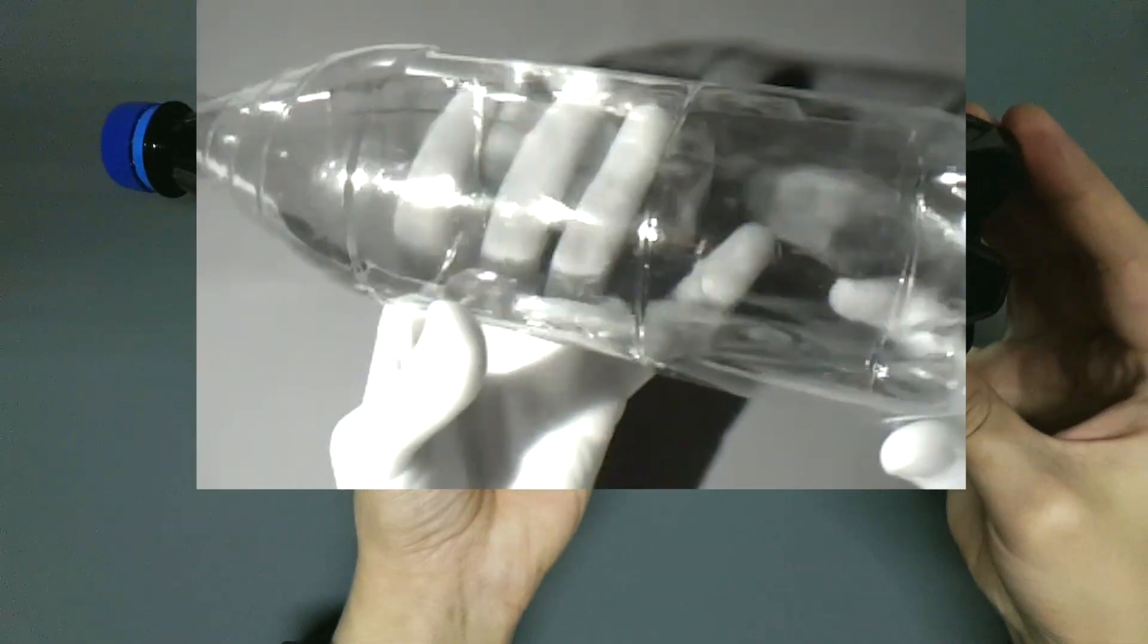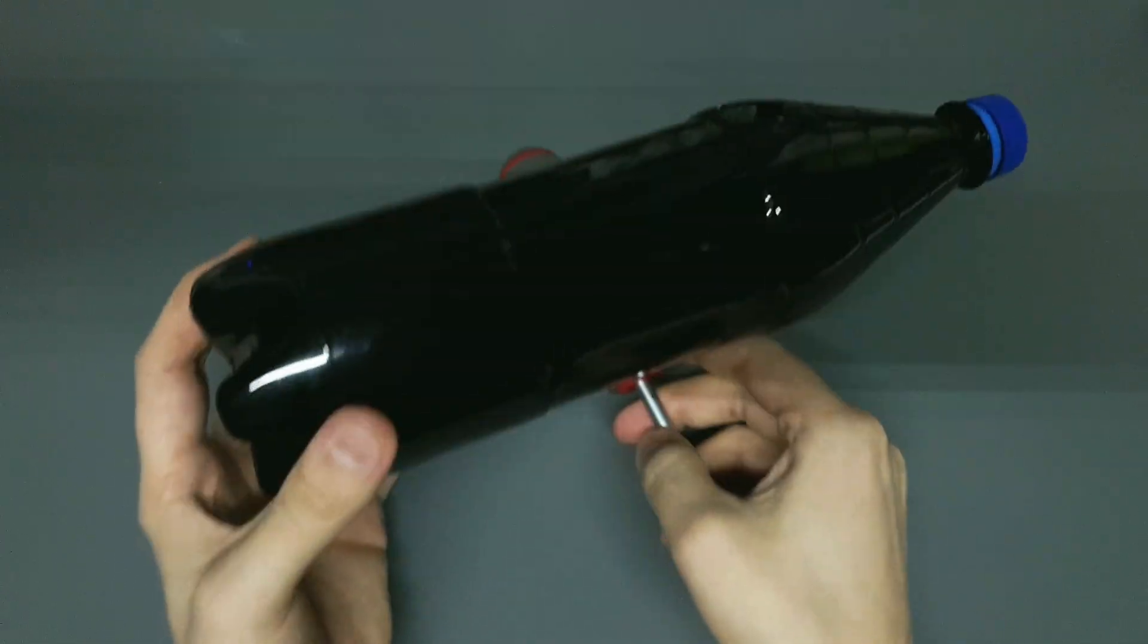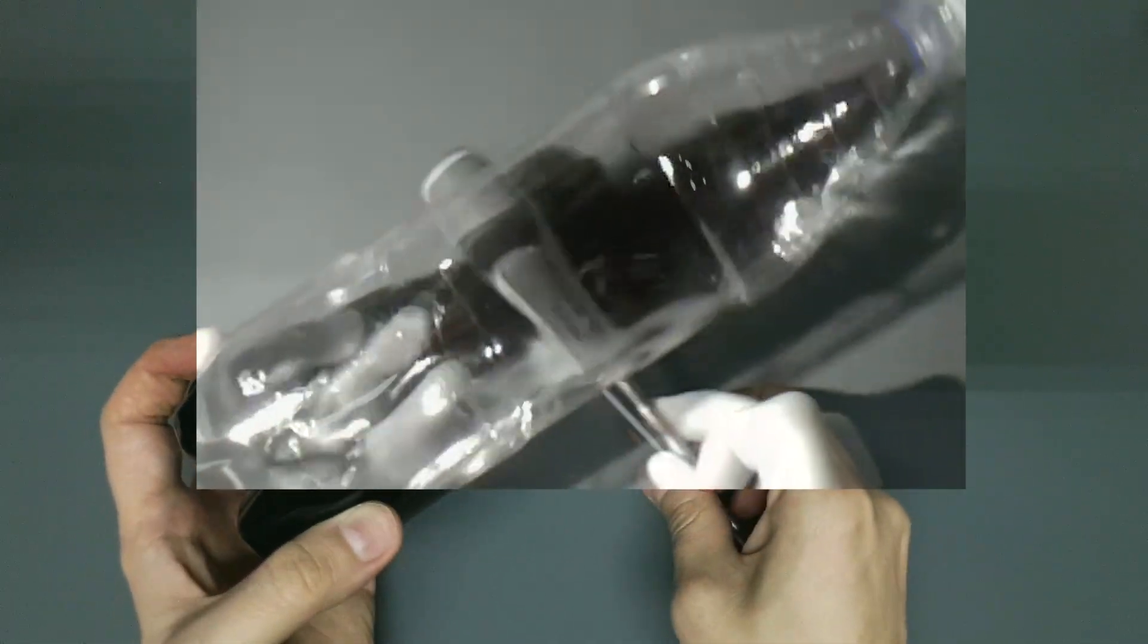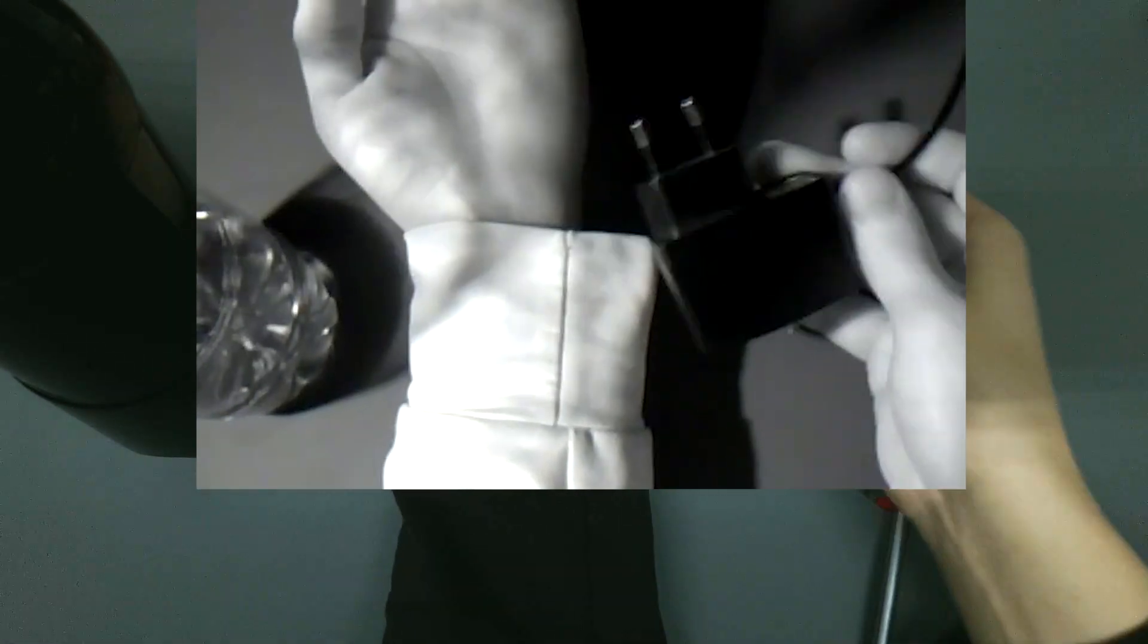Another fascinating property of near-infrared light is that some materials look very different in it. For example, this bottle becomes transparent. And some materials, instead of absorbing the light, actually reflect it. Like this black cloth, which reflects infrared light, making it appear white instead of black.